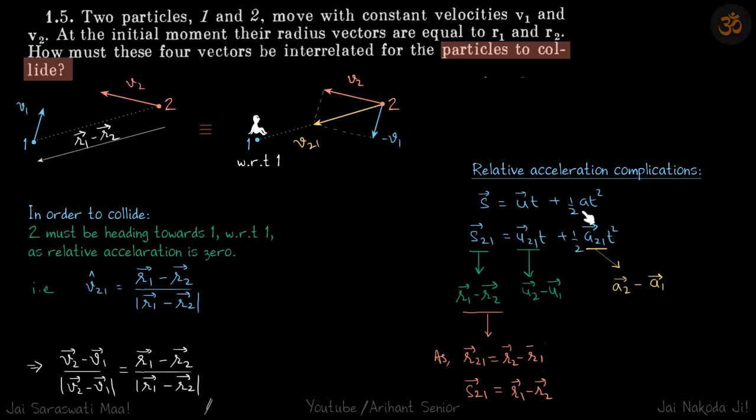We have the standard equation of motion: s = ut + ½at² in vector form. We can also write this equation for relative motion: s₂₁ = u₂₁t + ½a₂₁t².